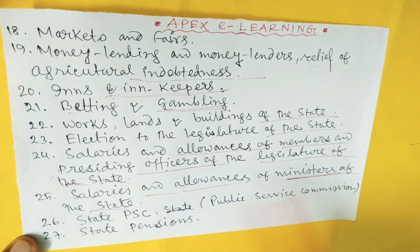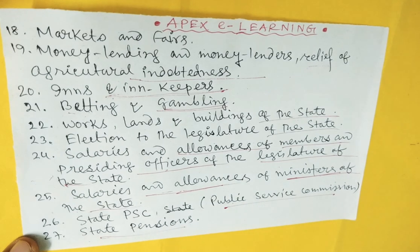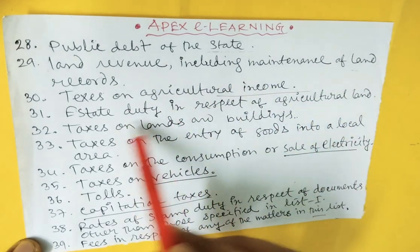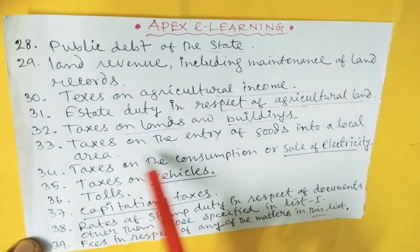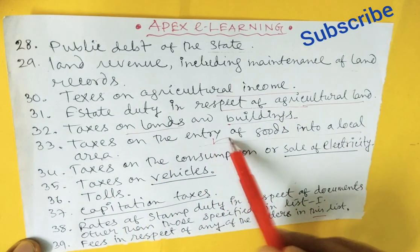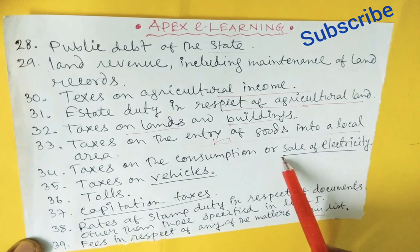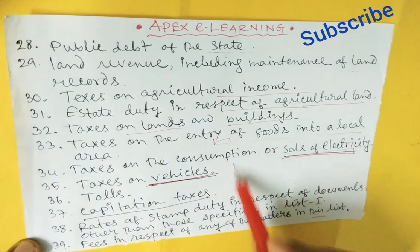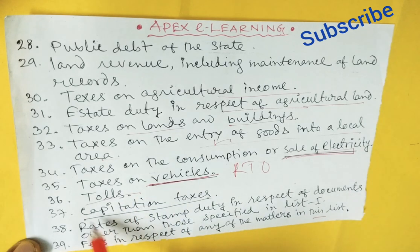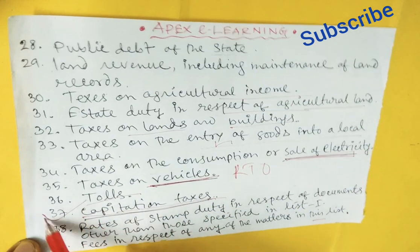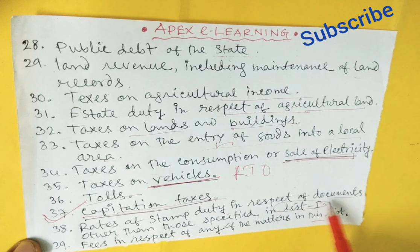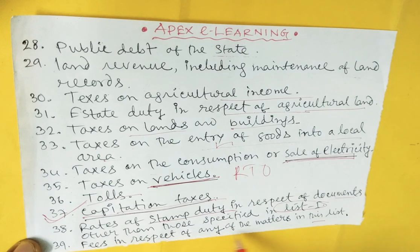Salaries and allowances of the members, presiding officers, and the legislature of the state; salaries and allowances of the ministers of the state. State public service commission. State pensions. Public debt of the state. Land revenue, including maintenance of land records. Tax on agricultural income. Estate duty in respect of agricultural land. Taxes on land and buildings. Taxes on the entry of goods into local areas. Taxes on the consumption or sale of electricity. Taxes on vehicles. Tolls. Capital tax. Rates of stamp duty in respect of documents other than those specified in list one. Fees in respect of any of the matters in the list.